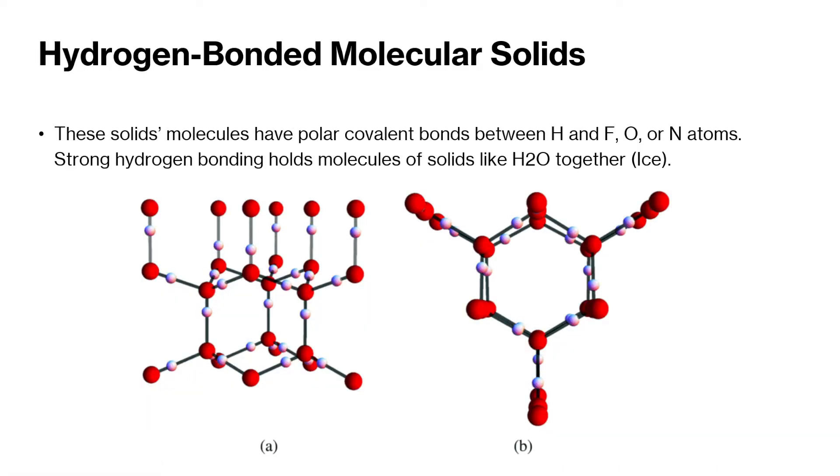Our next structure that we're looking at is hydrogen-bonded molecular solids. These solids, these solid molecules have polar covalent bonds between hydrogen, fluorine, oxygen, and nitrogen atoms. Strong hydrogen bonding holds molecules of solids like water together. So we're looking at the fact that when water freezes, I think we explored that in Cape Biology Unit 1. So when water freezes, it tends to extend, to expand, to become less dense and form these crystal lattices.